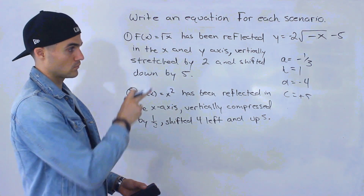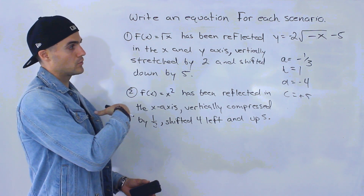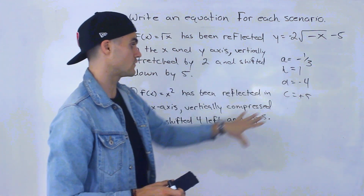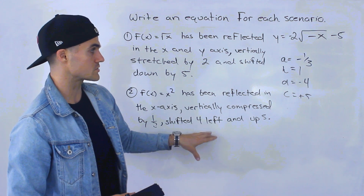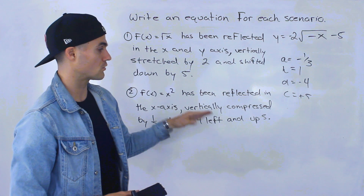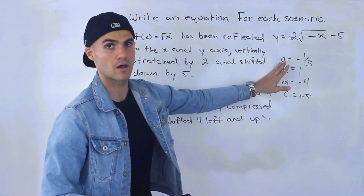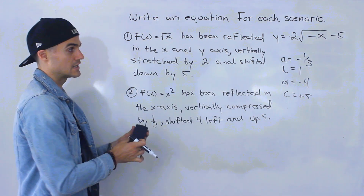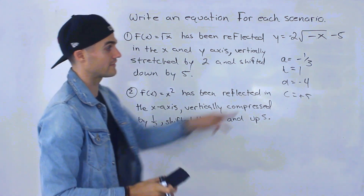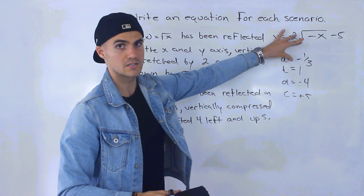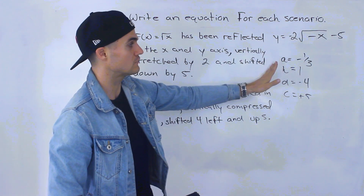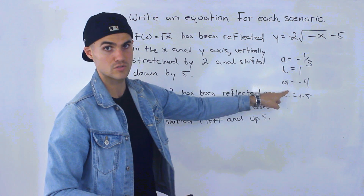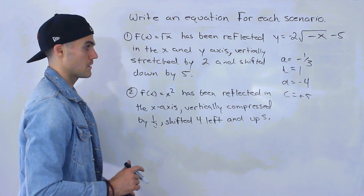Remember, a k value of 0 would eliminate the variable x entirely, so if nothing is mentioned about horizontal stretch, compression, or reflection in the y-axis, the k value is just positive 1. Same for the a value — if there's no reflection in the x-axis or vertical stretch or compression mentioned, a equals positive 1. The a and k values should never be 0. If there's no description given, they equal 1, while d and c equal 0 if there's no description given for those.